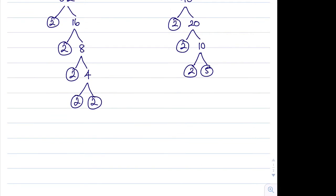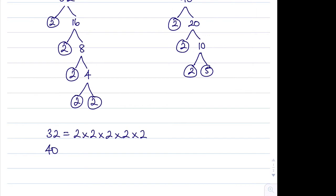Now what we need to do is take 32 and write it as a product of its primes. So we've got 2 multiplied by 2, multiplied by 2, multiplied by 2, multiplied by 2. And 40 is 2 multiplied by 2, multiplied by 2, multiplied by 5.